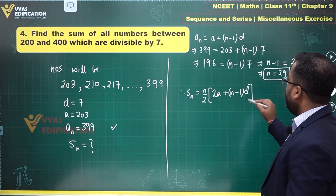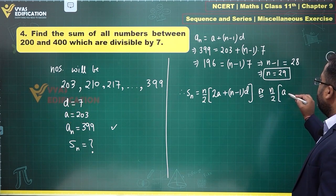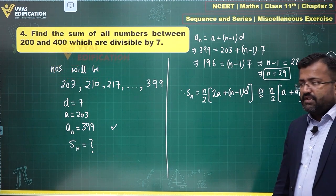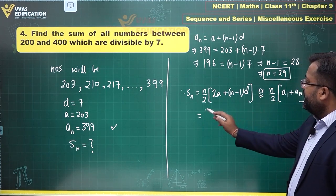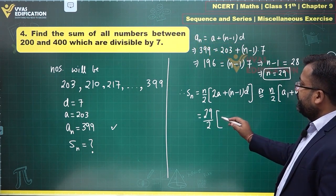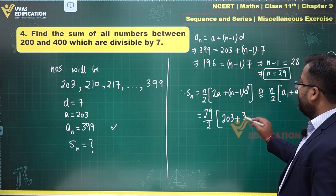First term plus last term. First term is equal to a, n is 29 by 2. In the bracket you have a which is 203, plus a_n which is 399.